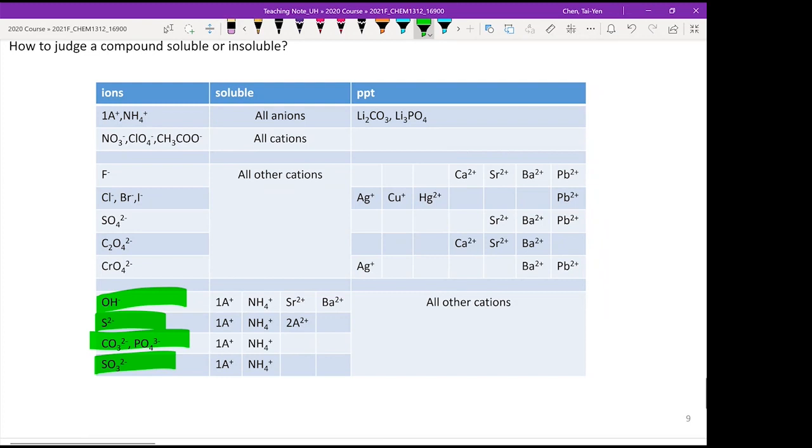Make sure you be sensitive to the chemical formula. If you see OH- minus, S2- minus, CO3 2- minus, PO4 3- minus, SO3 2- minus, these are the five anions that pretty much always give you insoluble salts.